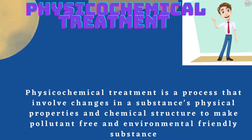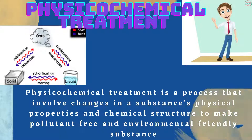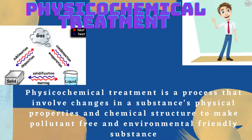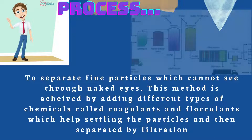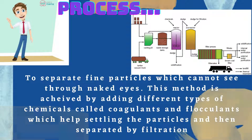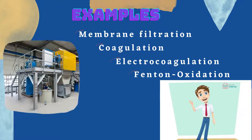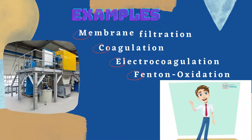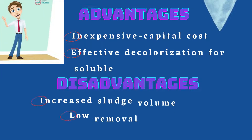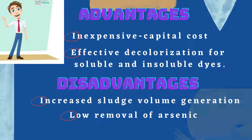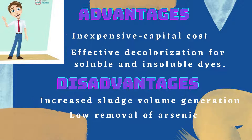Physicochemical treatment is the process involving changes in a substance's physical properties and chemical structure to make a pollutant-free and environmentally friendly substance. This process involves separating fine particles which cannot be seen through the naked eye. This method is achieved by adding different types of chemicals called coagulants and flocculants, which help settle the particles and are then separated by filtration. Examples of physicochemical treatment include membrane filtration, coagulation, etc. The advantage of this treatment is cost-effective decolorization for both soluble and insoluble dyes.